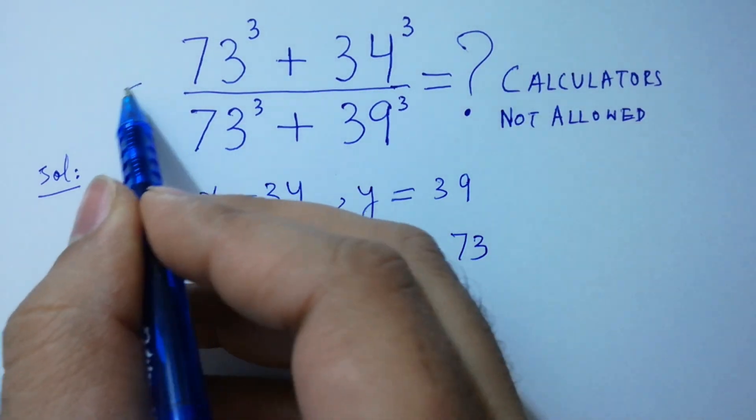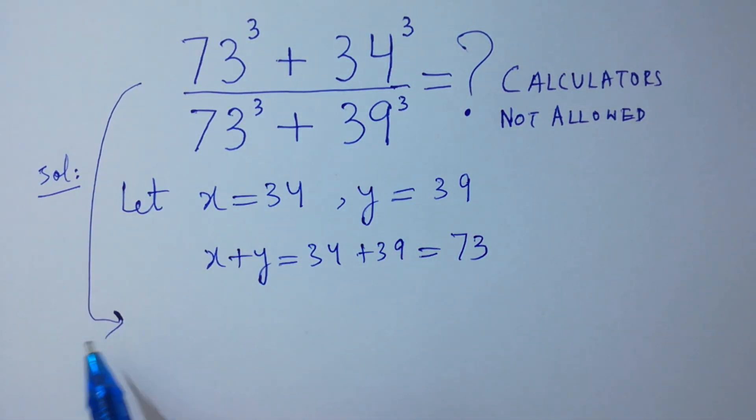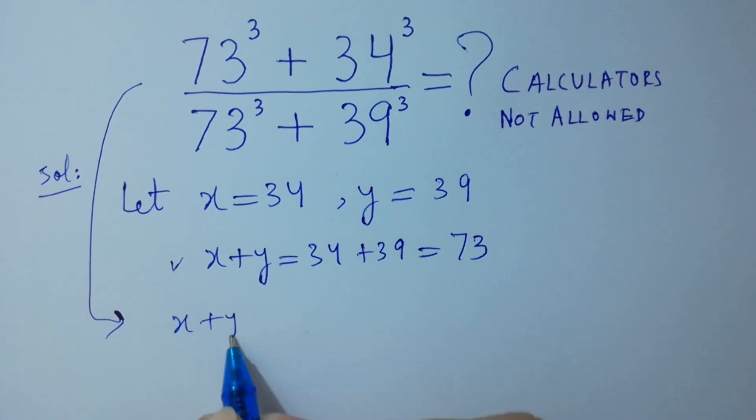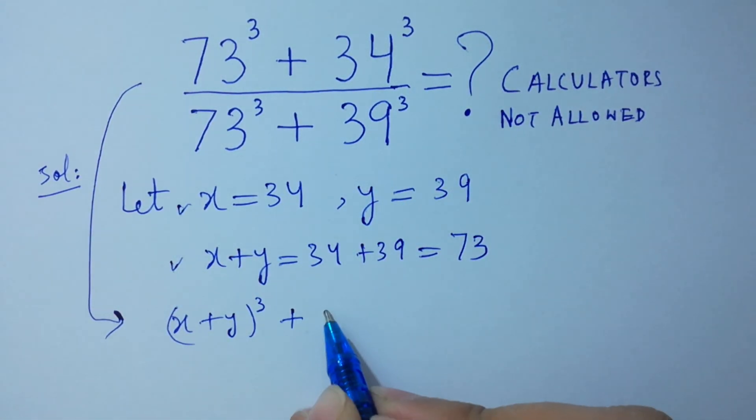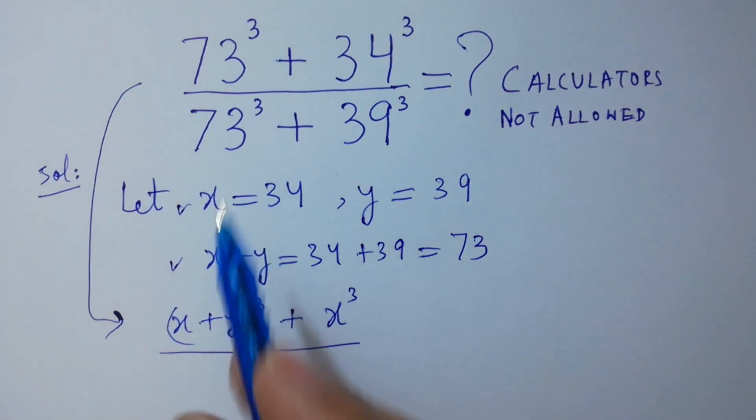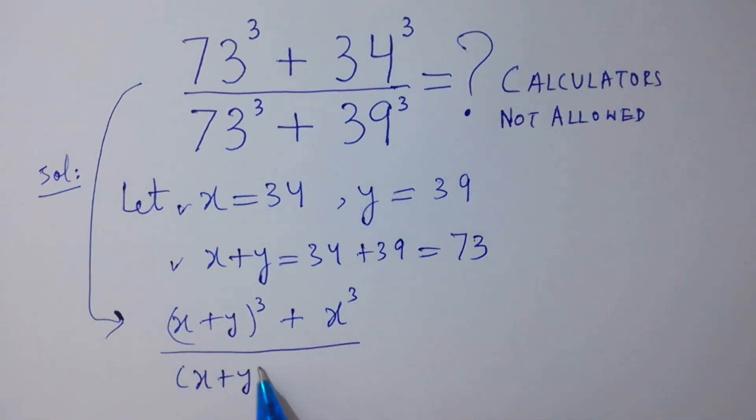Put the values here. We have 73 is x plus y, so x plus y cube plus 34 is x, x cube, over 73, x plus y cube, plus 39 is y, y cube. I hope you understood.